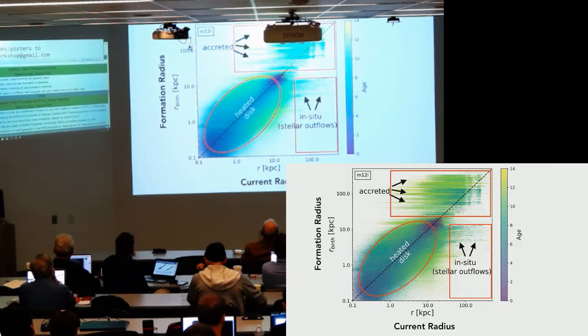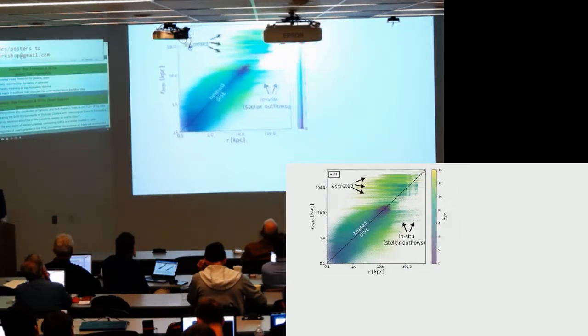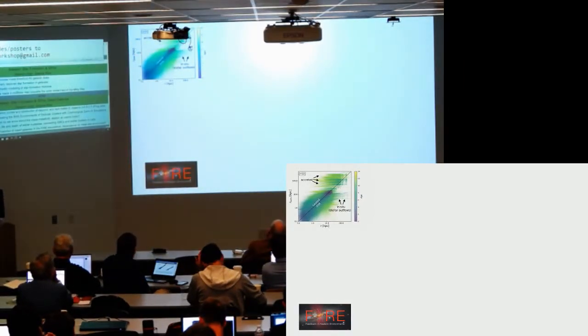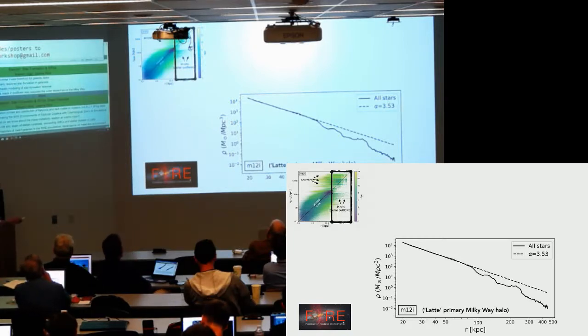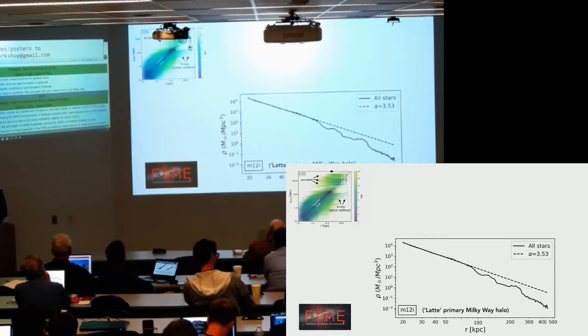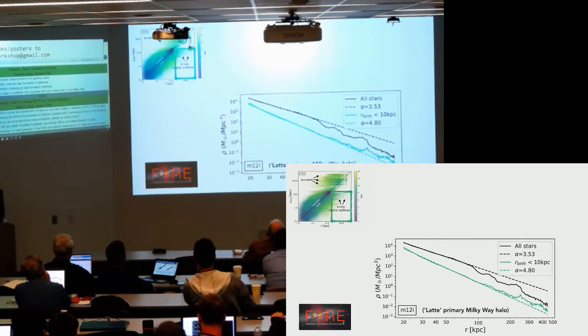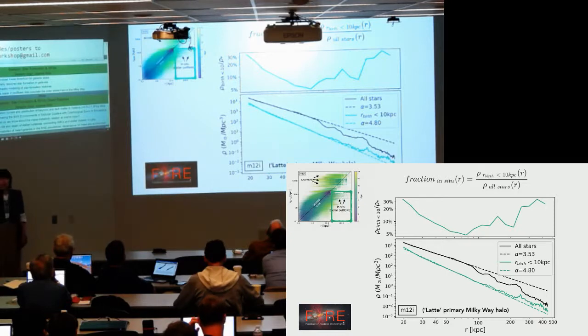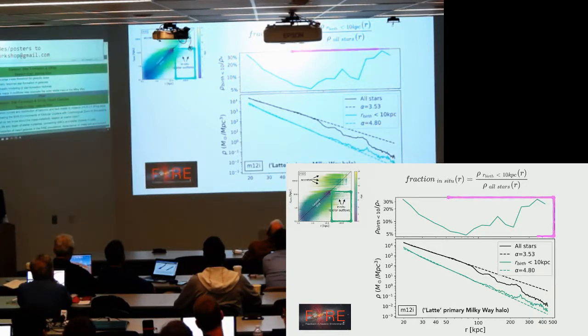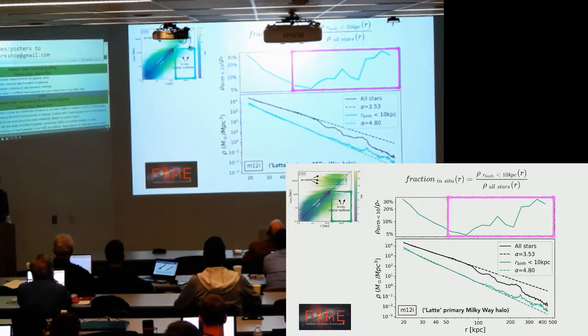So how do they get there? First of all, let's quantify our contribution here. Here we're showing the density profile for the outer stellar halo outside, say, 20 kiloparsec. If we only look at this part—the stars with birth radius smaller than 10 kiloparsec—we have this blue line here. Now let's just do a simple math by assuming that the fraction of the in-situ stars is the ratio of the two densities at different radii, and we get this one. As you can see, it's a pretty decent amount of contribution, especially at large radius. It can go all the way up to 20 or even 30 percent.